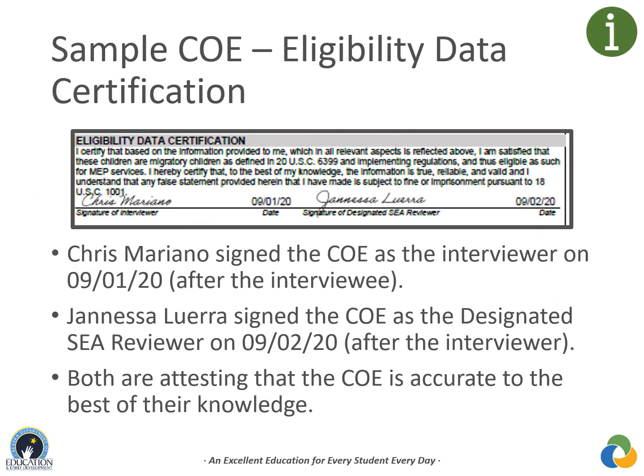At least one designated SEA reviewer must check each completed COE to ensure written documentation is sufficient and that the children are eligible for MEP services. The designated SEA reviewer's signature is required on all COEs; the interviewee and interviewer must sign before the designated SEA reviewer signs. By signing, the designated SEA reviewer does not guarantee eligibility — a final determination will be made by the Migrant Education Office. In this sample COE, Chris Mariano signed as interviewer on September 1, 2020, and Janessa Lawera signed as designated SEA reviewer on September 2, 2020, both certifying the information is true, reliable, and valid.